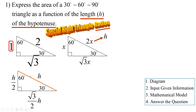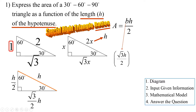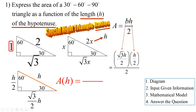Now I need the area in terms of h. Area of a triangle is base times height divided by 2. The base is root 3 over 2 times h, and the height is h over 2, then divide by 2. The numerator is root 3 times h times h, giving root 3 h squared, divided by 2, then divided by 2, then divided by 2 again — so dividing by 8. So A(h) equals root 3 h squared over 8.